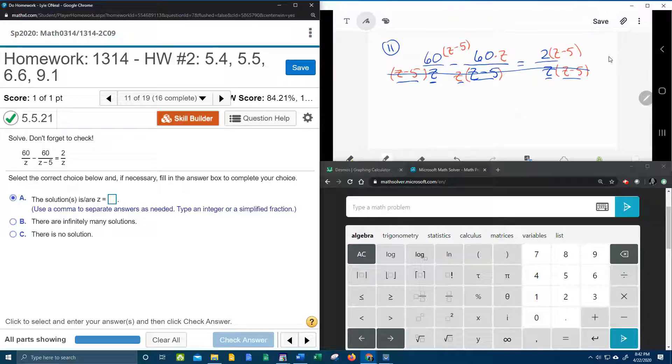And now we're going to have a new equation with no fractions. So we're going to have 60 times z minus 5 minus 60z equals 2 times z minus 5. That is our new equation with no fractions.